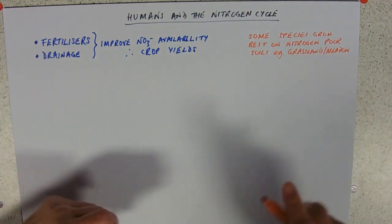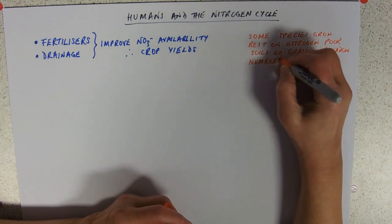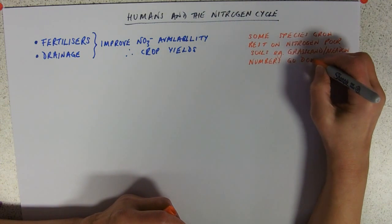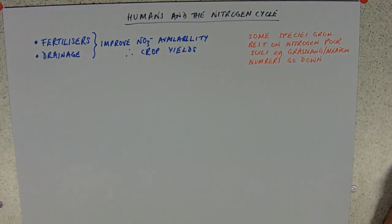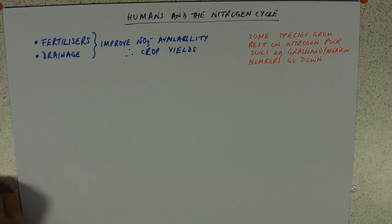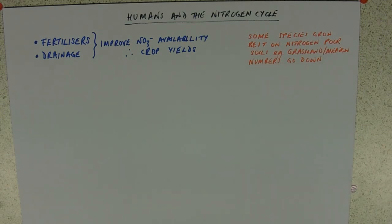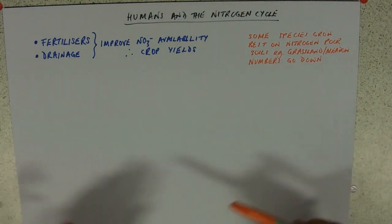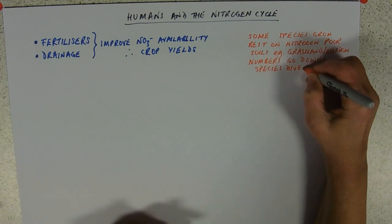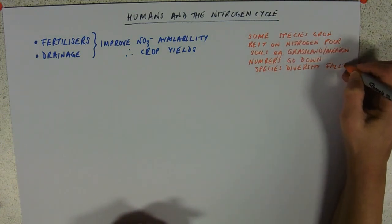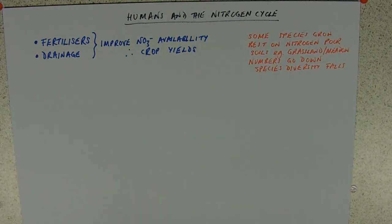If you improve nitrogen availability on pasture land, the numbers of these species go down. You should be aware of ways of measuring that — random sampling in areas where nitrate fertilizers have been applied versus areas managed to maintain low fertility. For example, if you want to grow a meadow in your garden, you plant meadow seeds but harvest the grass off the top and don't put it back, keeping the nitrogen content of the soil poor. Species diversity is therefore adversely affected.